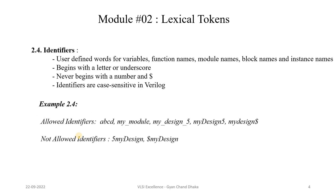The fourth type of token is identifier. Identifiers are nothing but user-defined words for variables, function names, module names, block names, or instance names. Any name which we define — for example, a variable name — is nothing but a user-defined identifier. The important point is that an identifier can begin with a letter or an underscore; it can never begin with a number or a dollar sign. Identifiers are always case sensitive in Verilog.